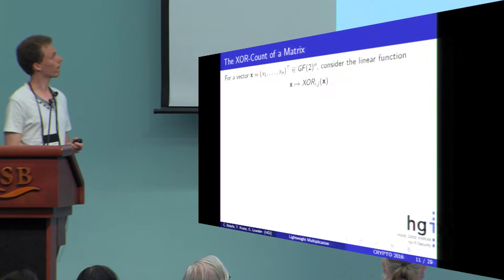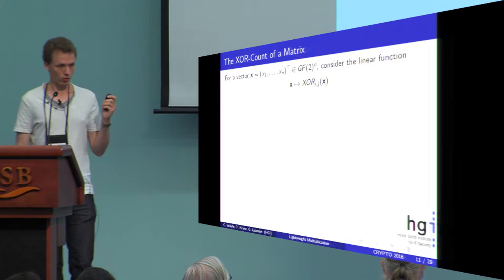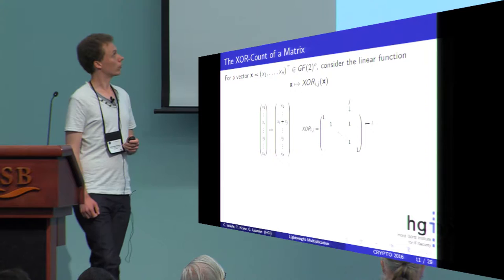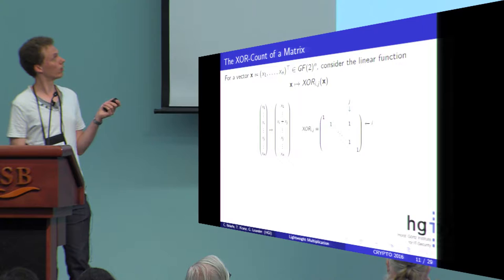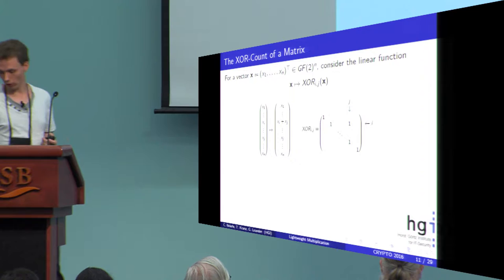What we need now is an appropriate metric for the efficiency of a matrix, which is called the XOR count of a matrix. We define it as follows: for an n-dimensional vector, we consider the linear function XOR_ij, which just XORs the i-th component to the j-th component, and stores the value in the i-th component. In matrix notation, this is just the identity matrix plus one additional entry in the i-th row and the j-th column, and all other entries are zero.